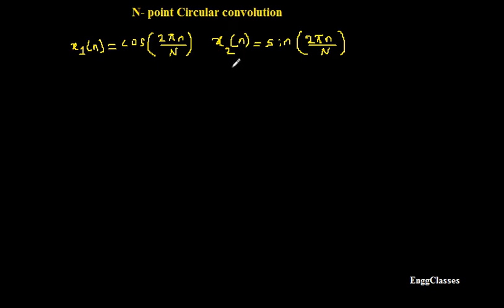This numerical can be solved using Stockham's method, also known as the frequency domain method. Before we start finding the N-point circular convolution, the sequences x1(n) and x2(n) need to be expressed in terms of their exponentials.